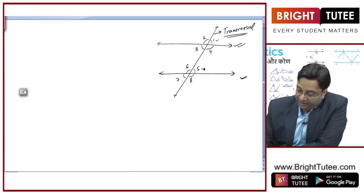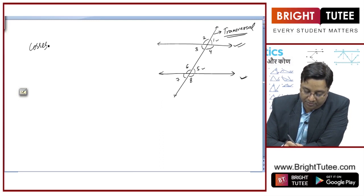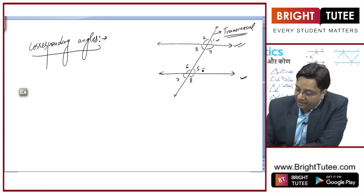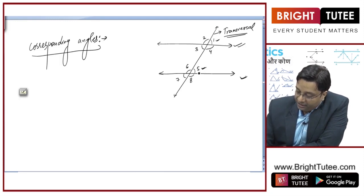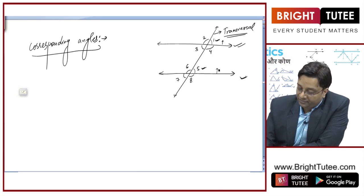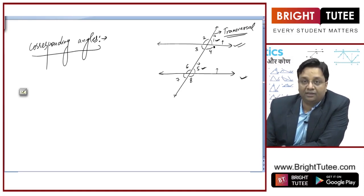Angle 1 and angle 5 are known as corresponding angles. Corresponding angles are the angles on the same side of both the lines. Angle 1 is on this side of this line and angle 5 is also on this side. Similarly, angle 1 is on the right side of the transversal and angle 5 is also on the right side of the transversal. These angles are corresponding angles.